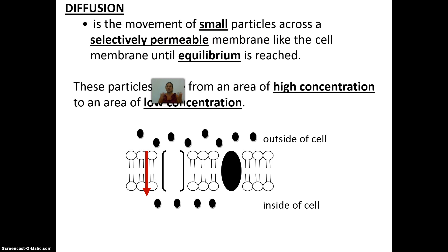Diffusion is the movement of any small particles across the membrane until a state of equilibrium is reached. This doesn't require any energy — it goes from a high concentration to a low concentration. Equilibrium means the molecules have spread out as much as they can. Think about a crowded elevator: as someone gets off, you naturally shift and wiggle to spread out. That's exactly what molecules do — they want to diffuse as much as possible until they reach equilibrium.